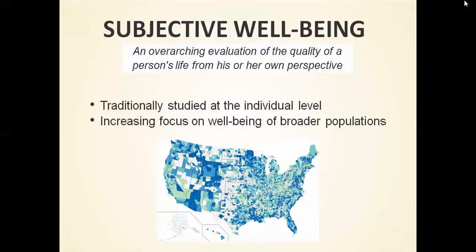I got into subjective well-being research in the context of aging for a number of reasons. A lot of the things that might matter for subjective well-being are things that actually change as people go through their lives. We've already heard about changes in health status, changes in resources, and changes in social relationships. This leads to really important questions about what that means for this overall evaluation over time.